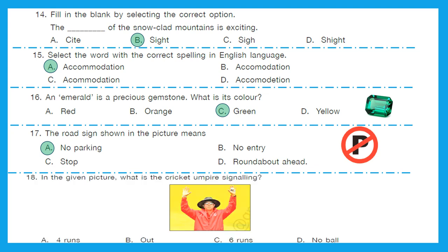Question 18: In the given picture, what is the cricket umpire signaling? This you all must already know. The right answer is six runs. Option C is the right one.